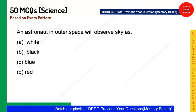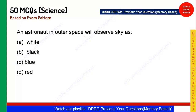An interesting and important question from an astronaut's perspective: In outer space, an astronaut will observe the sky as what color? It is not blue — it is black. You will see everything as black in space, as shown in many movies as well.